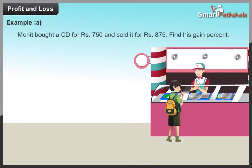Example: Mohit bought a CD for Rs. 750 and sold it for Rs. 875. Find the gain percent. Solution: CP is equal to Rs. 750.